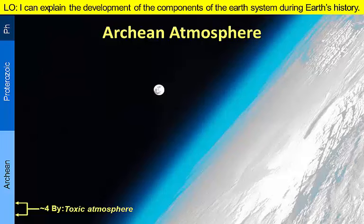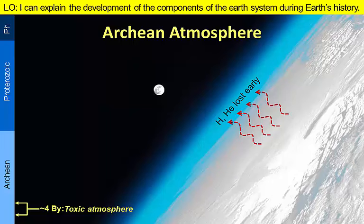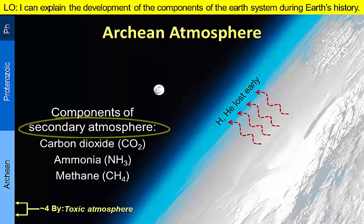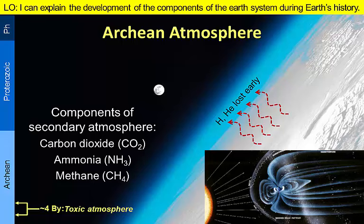The very first atmosphere was helium and hydrogen left over from the formation of the planet. These light gases were quickly lost to space. Then outgassing from volcanic eruptions contributed to a secondary atmosphere, which would have differed substantially from the air we breathe today — there was no oxygen and high concentrations of carbon dioxide, ammonia, and methane. Differentiation of Earth's core resulted in the development of a magnetic field to protect this new atmosphere from solar winds.